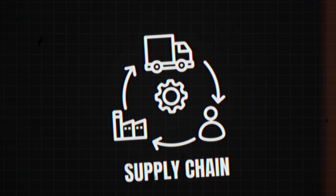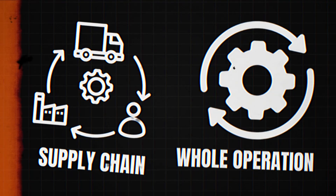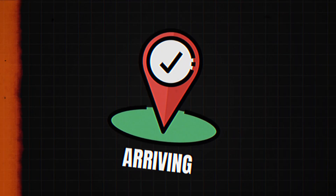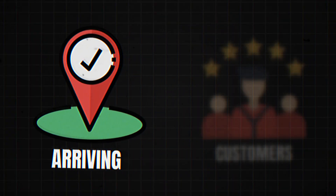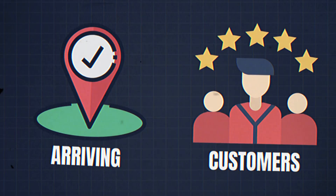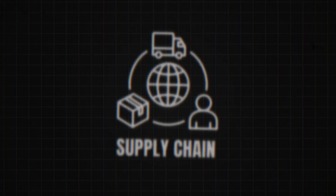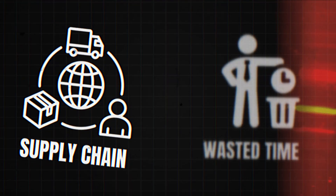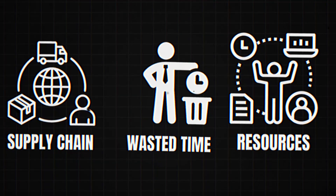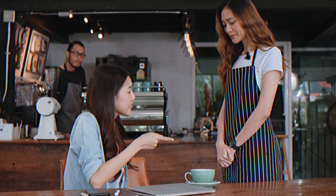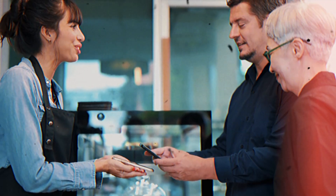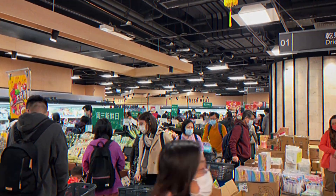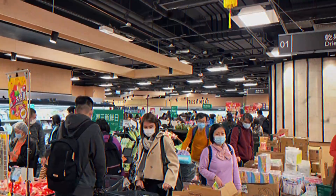When the supply chain isn't working smoothly, it affects the whole operation. For instance, if goods are frequently arriving too early or too late, it can slow down the process of getting products to customers. This reduces the efficiency of the supply chain, leading to wasted time and resources. Inefficiencies can also make customers unhappy if they're not getting their products when they expect them, which can hurt a company's reputation and its ability to keep customers coming back.